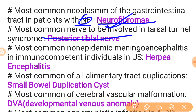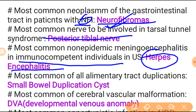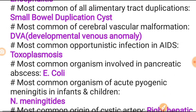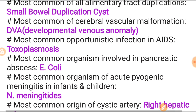Most common non-epidemic meningitis in an immunocompetent individual is asked - Haemophilus influenzae is the most common question. Most common duplication of the alimentary tract is small bowel duplication cyst - remember this important question before exam. Most common cerebral vascular malformation is developmental venous anomaly. Most common opportunistic infection in AIDS patients is toxoplasmosis.